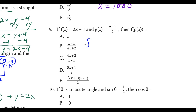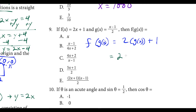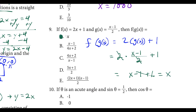Question nine, we're finding f of g of x — composition of functions. We have the f of x function, and when we find f of g of x, we replace each x with the function g of x. So we'll have 2 times g of x, which equals x minus 1 over 2, and then tack on the plus 1. The 2 over 2 cancels, and negative 1 plus 1 also cancels, leaving us with just x. So we're going with choice A.